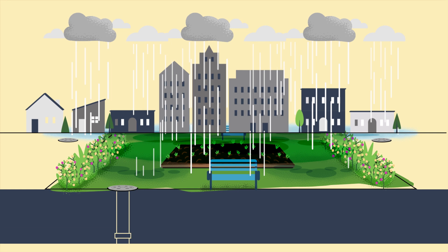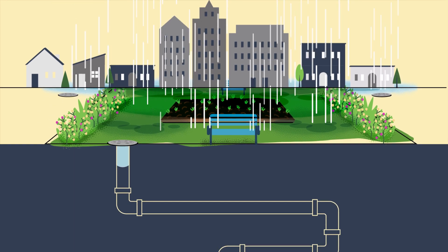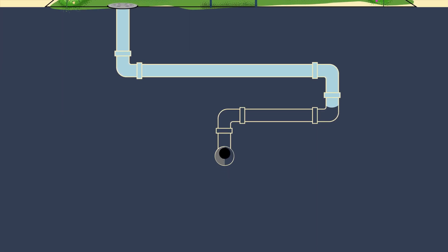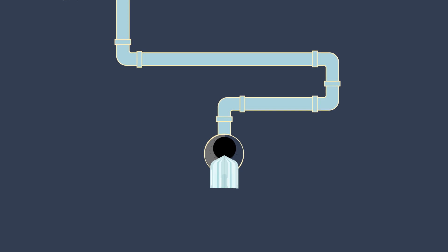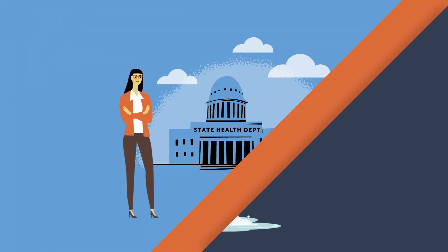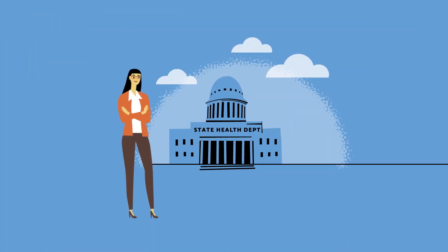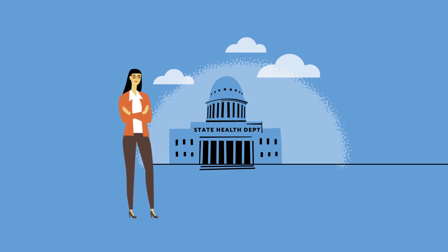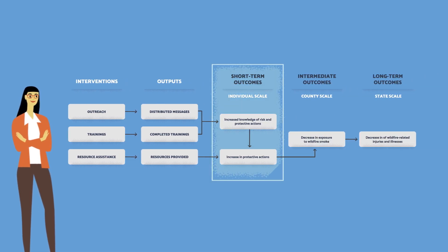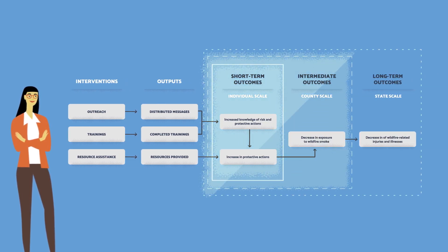Instead, they may decide that resources should be redirected towards more sweeping efforts, such as installing larger pipes to better manage the volume of stormwater. Meanwhile, at her state health department, Elaine continues her evaluation work on wildfire preparedness. She is using shapes and design elements to describe how the multi-tiered program crosses different scales.